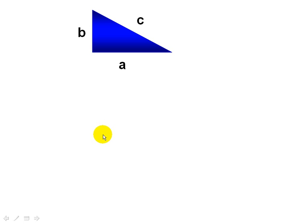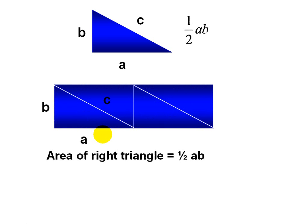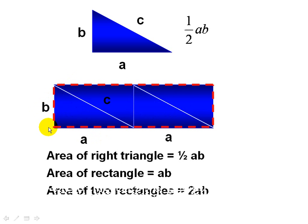So let's get started with the Pythagorean Theorem. First of all, let's start off with the area of a triangle, which we know is one-half AB. The area of a rectangle is A times B, and the area of two rectangles shown here is just 2AB.